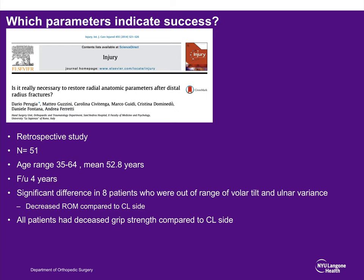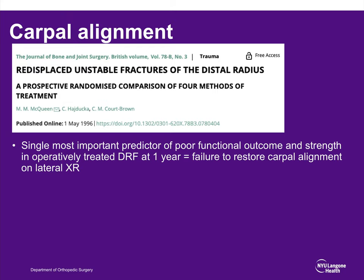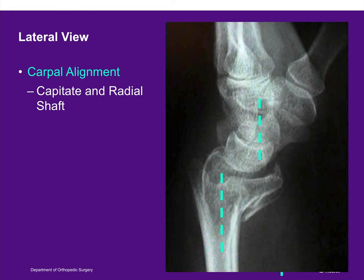What parameters predict success? Patients who end up with loss of volar tilt and increased ulnar variance can be predicted to have decreased grip strength and less optimal outcomes. Carpal malalignment has also been identified as an important predictor of poor functional outcome. Greater than 5 millimeters of palmar translation of the carpus is associated with poor outcomes.